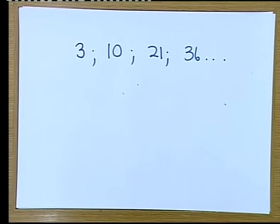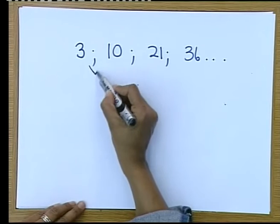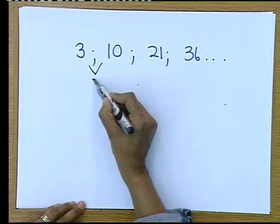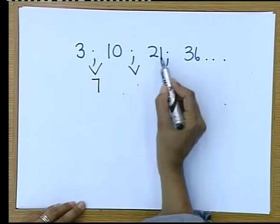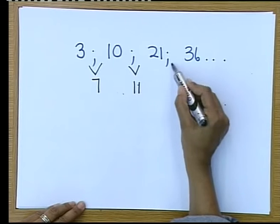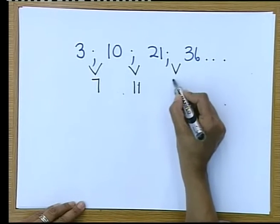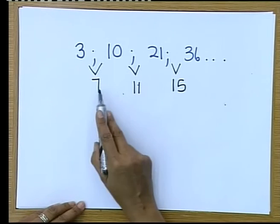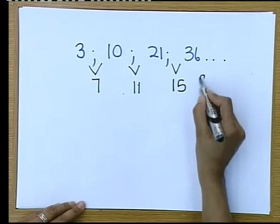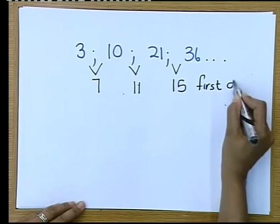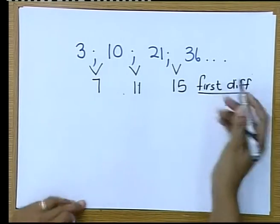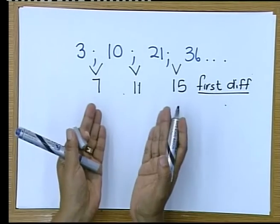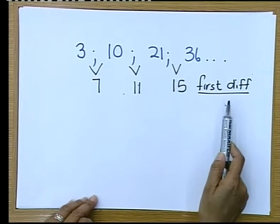Now you're thinking, I'm first going to check if my first difference is the same. Between 10 and 3 is 7, 10 and 21 is 11, and 21 and 36 is 15. Now you check, this is my first difference. So it cannot be an AP. It cannot be an AP because your first difference is not the same.